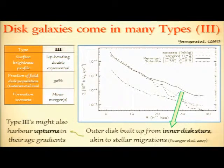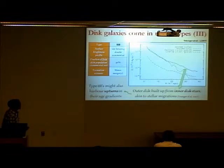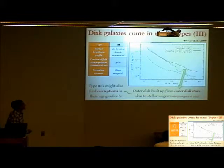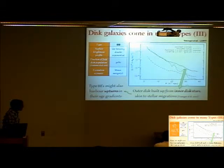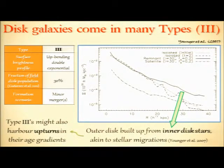The third type of disk galaxy, the type 3s, are also defined by light profiles that have a double exponential decay, except in this case the outer exponential is shallower than the inner one. Although these galaxies are found a little more frequently in the field than the type 1s, making up just under a third of the population, they've been poorly studied theoretically. The only models to date are those of Younger et al., who suggested these galaxies could be formed by having minor mergers onto pre-existing disks, where the outskirts of the remnant would be largely built up from inner disk stars that acquired angular momentum from the satellite.